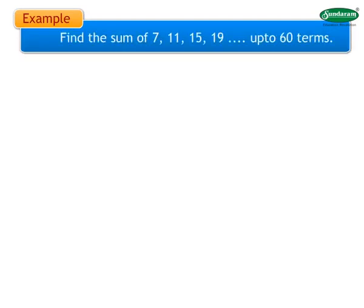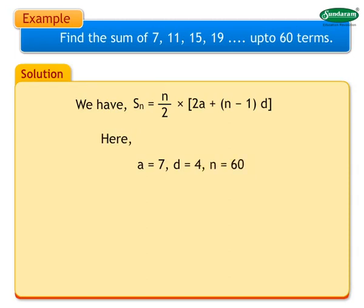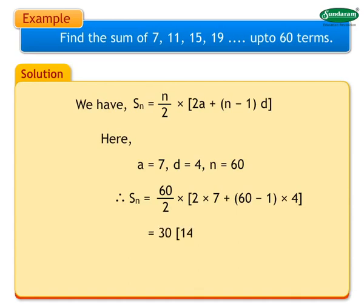Let us look at a solved example. Find the sum of 7, 11, 15, 19 up to 60 terms. Solution: we have Sn equals n/2 into [2a + (n−1)d]. Here A equals 7, D equals 4, n equals 60. So S60 equals 60/2 into [2×7 + (60−1)×4] equals 30 into [14 + 236] equals 30 into 250 equals 7,500.